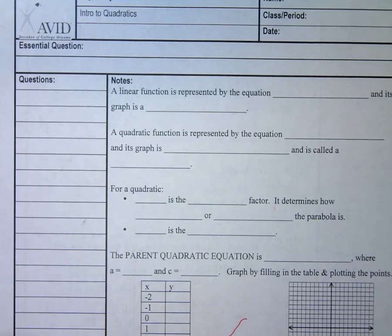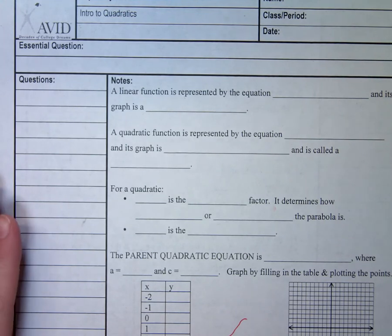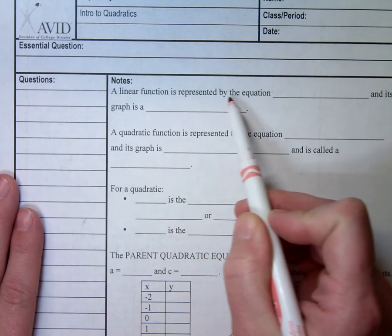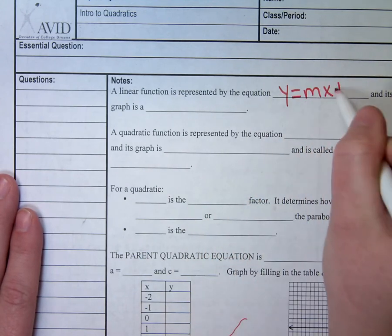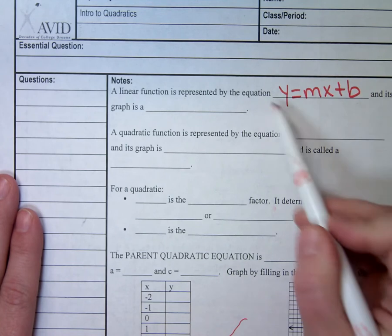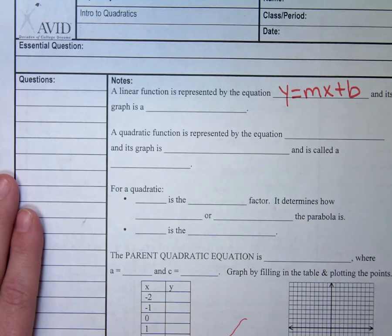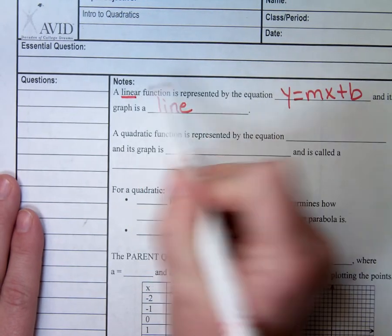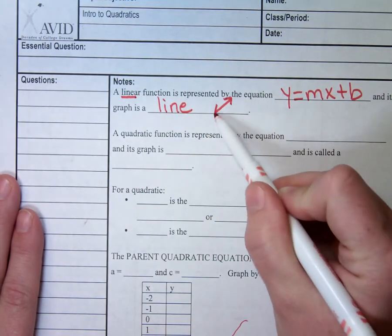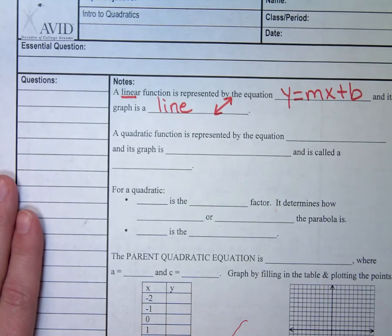We are starting our unit on quadratics. This is something we're going to visit this week and might come back to. We've been graphing things that are linear, which are straight lines. A linear function is represented by the equation y equals mx plus b. This is slope-intercept form, and its graph is a line.